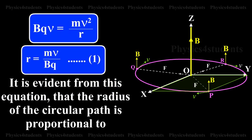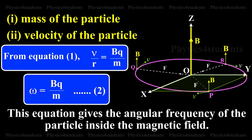BQV is equal to MV square by R. R is equal to MV by BQ. This is equation number 1. It is evident from this equation that the radius of the circular path is proportional to mass of the particle and velocity of the particle.